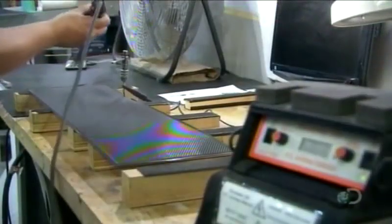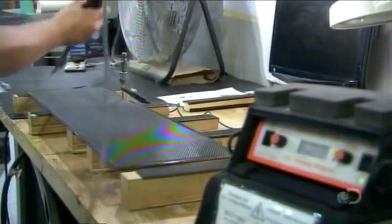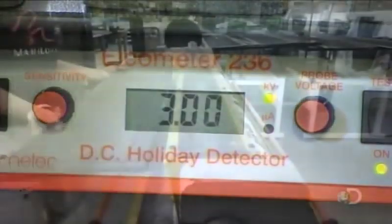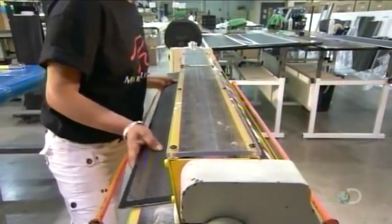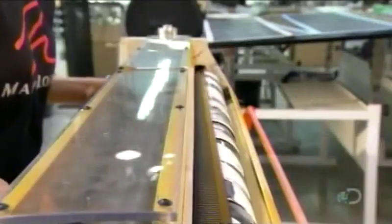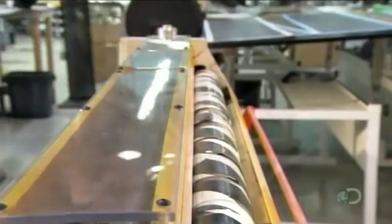They make the electrostatic speaker from two perforated metal panels. A technician applies a charge to them to check for thin spots. Next, she bends each one to a 30-degree curve. This will allow sound to be more widely dispersed in a room.